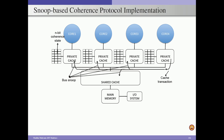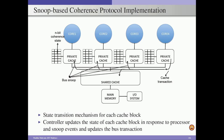In the snoop-based system, the cores are connected by a common bus. Whenever any core wants to initiate a transaction, it places the transaction on the bus and all other cache controllers will snoop on the bus and take the appropriate action. The cache controller updates the state of each block in response to processor and snoop events on the bus, and also updates the bus transactions. This is the overall idea of a snoop-based cache coherency protocol.